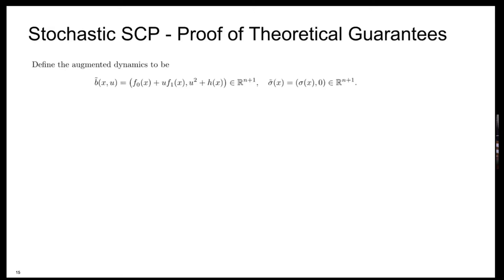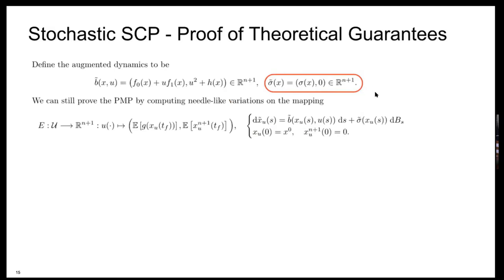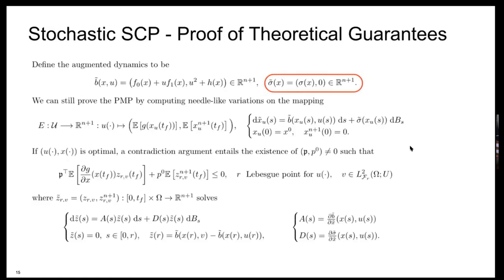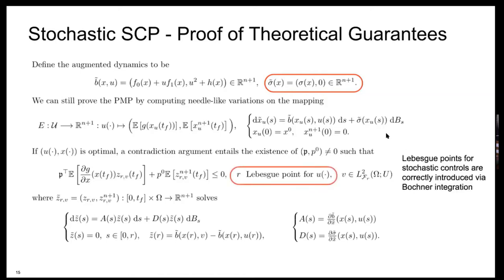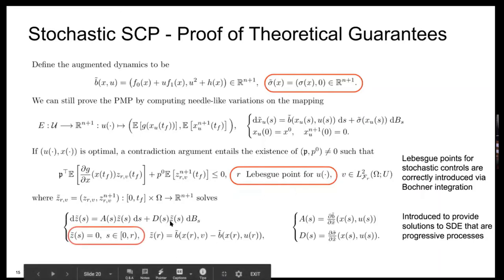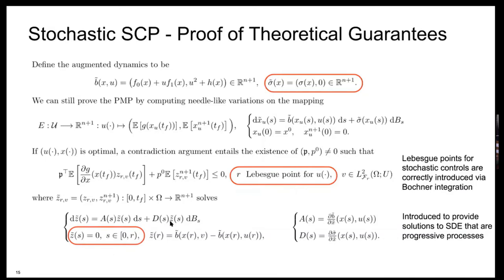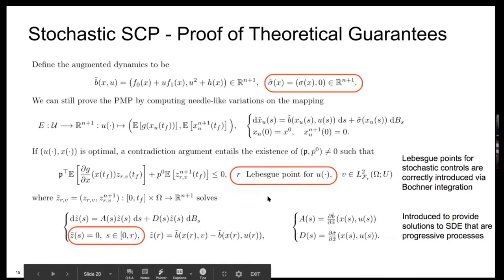The interesting fact is that the proof goes exactly the same way as before — using needle-like variations that grant continuity of the variational inequality. Actually for the stochastic case, the difficulty was that we couldn't find a proof by needle-like variation of the stochastic PMP — only other variational principles were available — so we needed to redo it from scratch. But the idea behind the proof is always the same. Up to Itô calculus technicalities, we define augmented dynamics, augmented diffusion, prove the PMP by computing needle-like variations on the modified endpoint mapping considering just expectations, and by contradiction we discover the variational inequality.